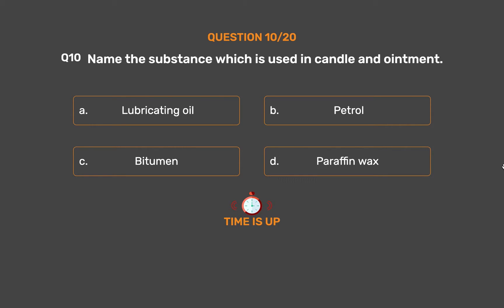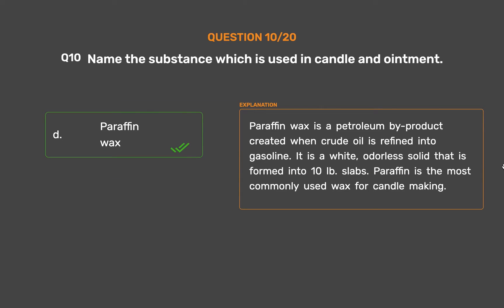The correct answer is Option D: Paraffin wax. Paraffin wax is a petroleum by-product created when crude oil is refined into gasoline. It is a white, odorless solid formed into 10-pound slabs. Paraffin is the most commonly used wax for candle making.